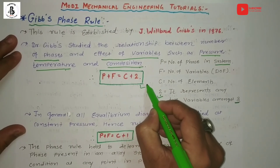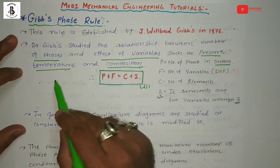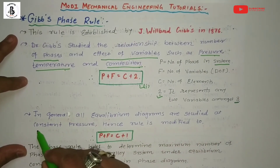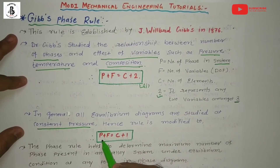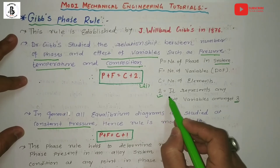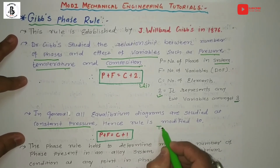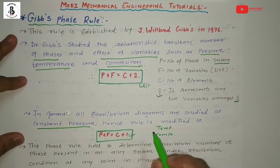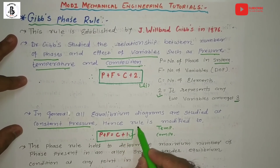The first equation P plus F equals C plus 2 is for three variables: pressure, temperature, and composition. But in general, all equilibrium diagrams are studied at constant pressure. So this rule is modified to P plus F equals C plus 1, because now there are only two variables — temperature and composition — so the constant becomes 1. This is the modified Gibbs phase rule.